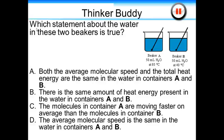Thinker Buddy question. Which statement about the water in these two beakers is true? Beaker A has 50 milliliters of water, and it's at 80 degrees Celsius. Beaker B has 50 milliliters of water, and it's at 40 degrees Celsius. Both the average molecular speed and total heat energy are the same in both containers. There is the same amount of heat energy present in both containers. C. The molecules in container A are moving faster on average than the molecules in container B. Or D. The average molecular speed is the same in the water in containers A and B.